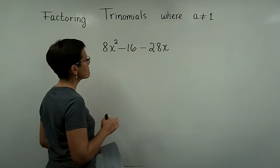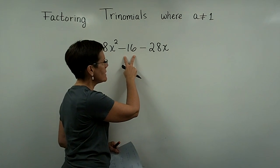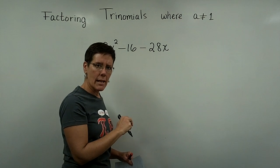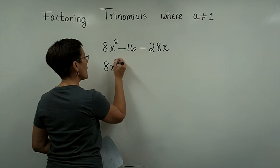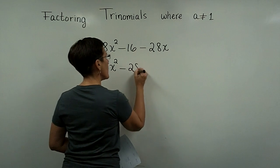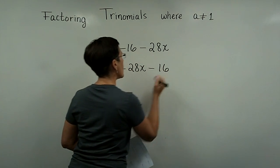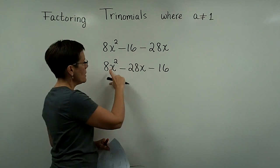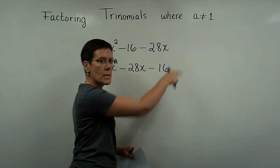Look at this problem: 8x squared, then a constant of minus 16, and then minus 28x. Would you always please first rearrange this problem and put the minus 28x in the middle and then the constant. So my degree here is 2. I have my x squared term, then my x term, and then my constant.